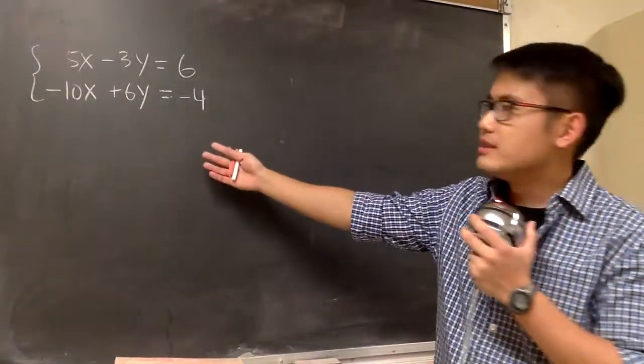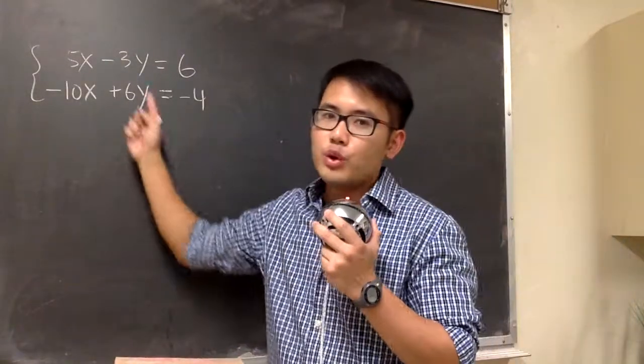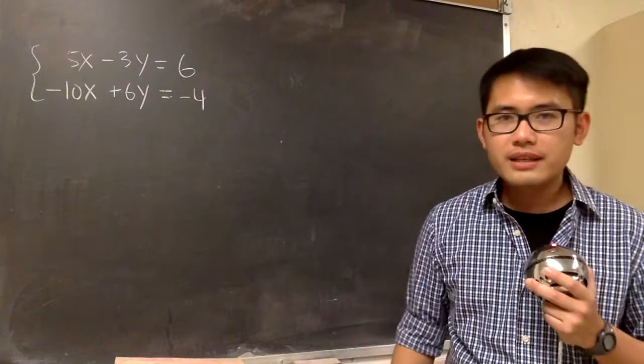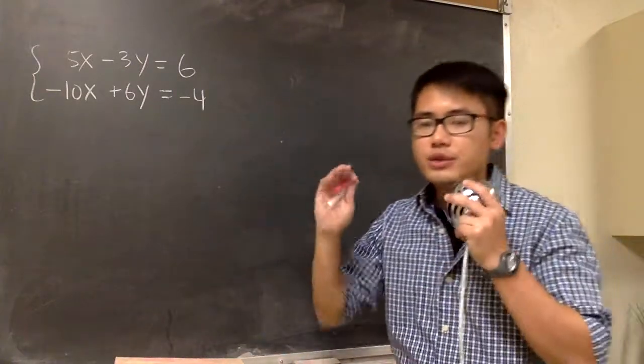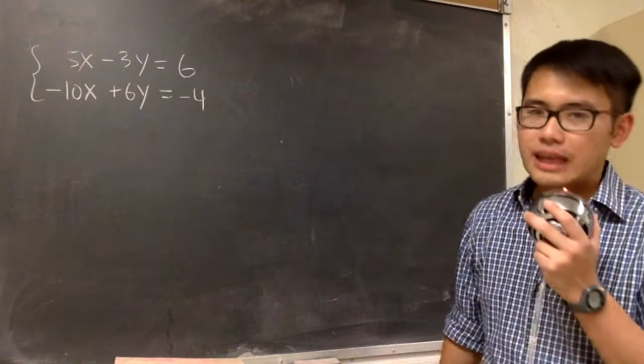Okay, we are going to solve this system of equations, and as we can see, none of the variables has been isolated for us. Therefore, we should use the elimination method because it's usually faster than substitution.